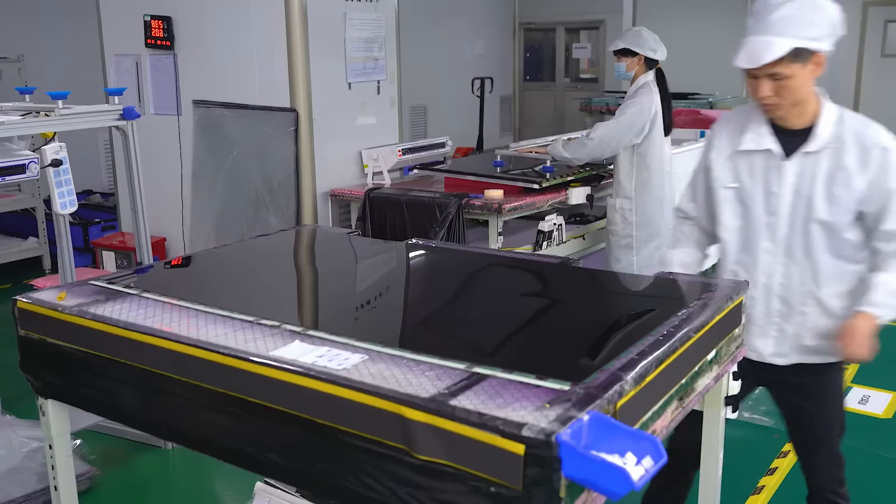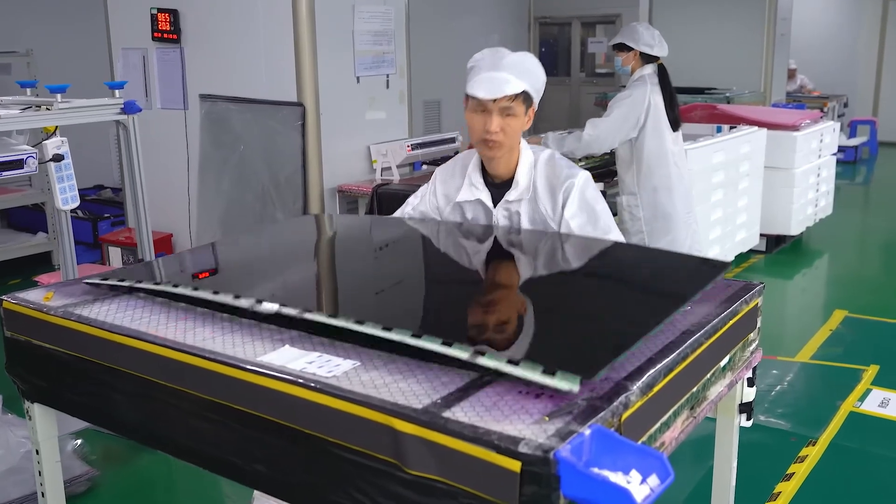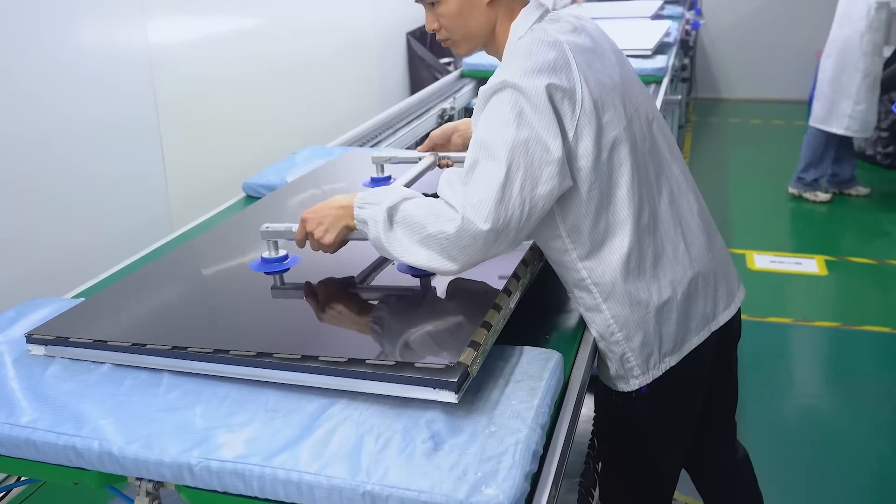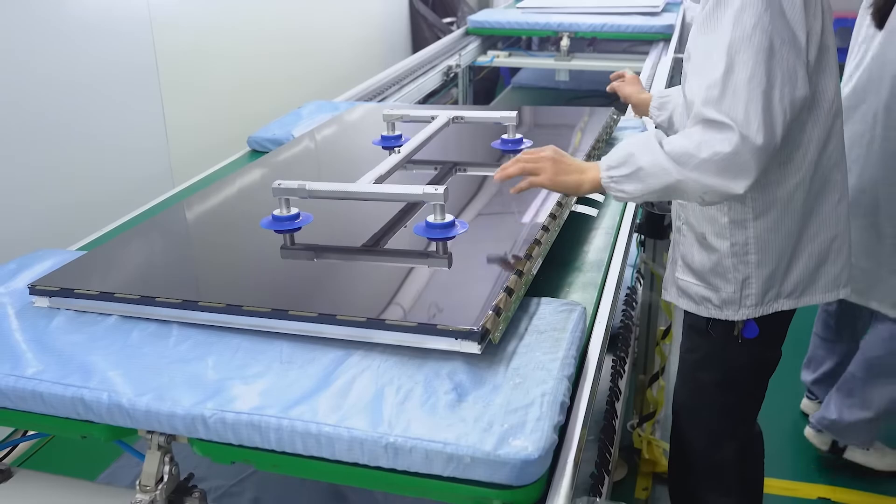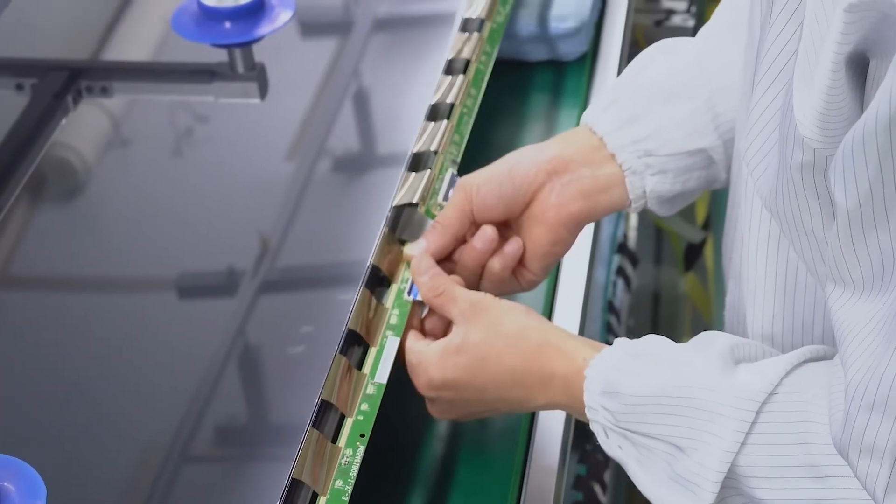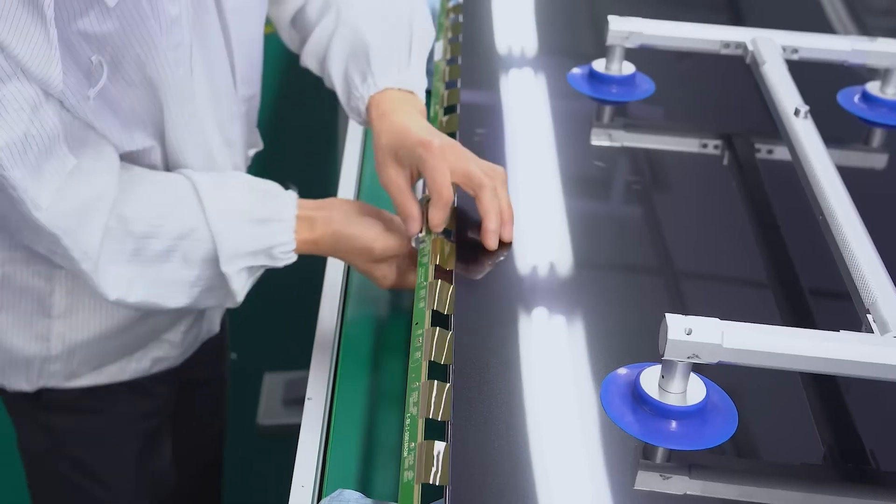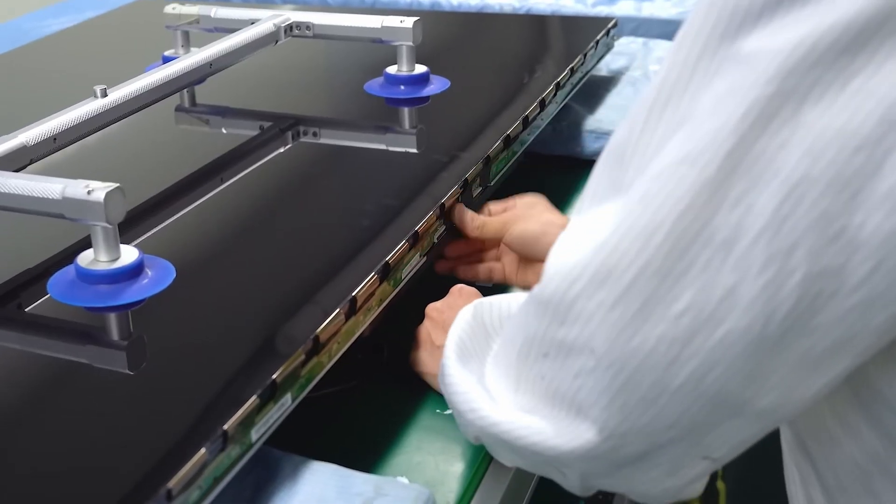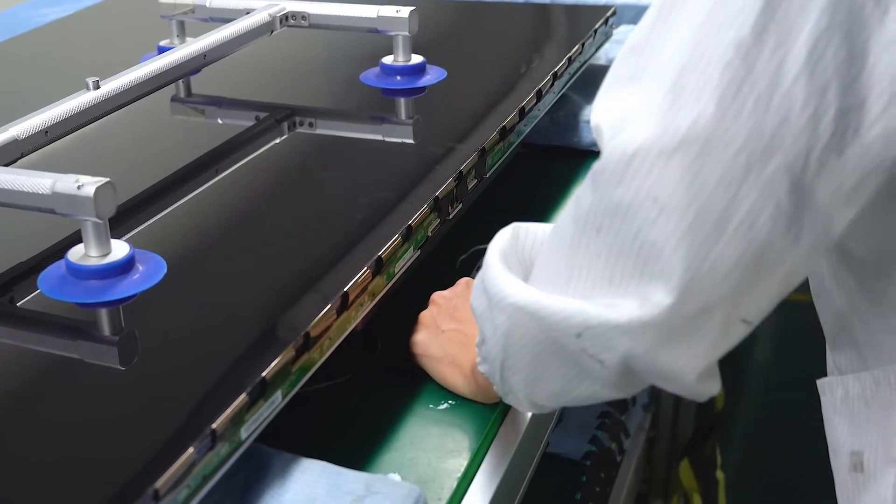Polarizers are applied to both the front and back of the LCD cell. These polarizers are crucial for modulating the light that passes through the liquid crystals. The rear polarizer filters light from the backlight, allowing only certain light waves to pass through, while the front polarizer ensures that the light passing through the liquid crystals is correctly oriented to create the desired image.